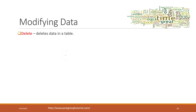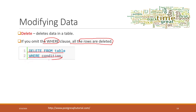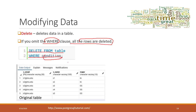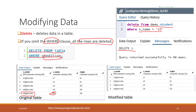The last operation is DELETE. You can also delete records from tables. Again, if you don't have the WHERE clause, all the rows will be deleted and you cannot undo that. The syntax is DELETE FROM table WHERE condition. Here we have S5 students, and saying DELETE FROM demo.students WHERE name equals S5 will delete that record, and querying again, the record is gone.